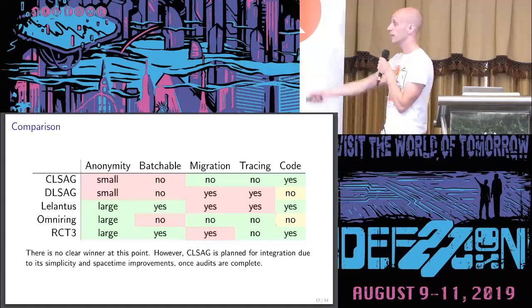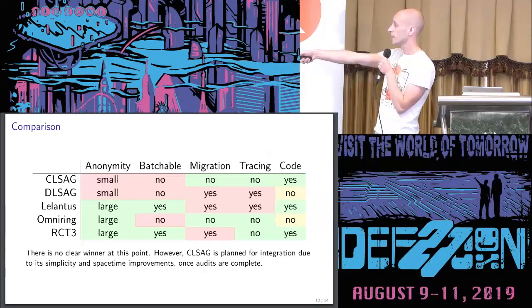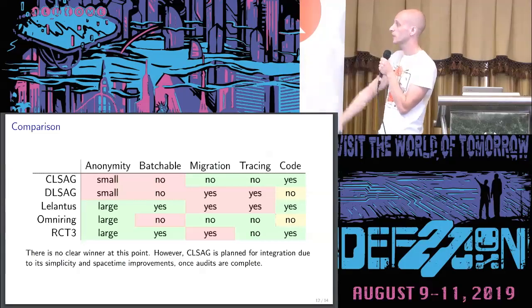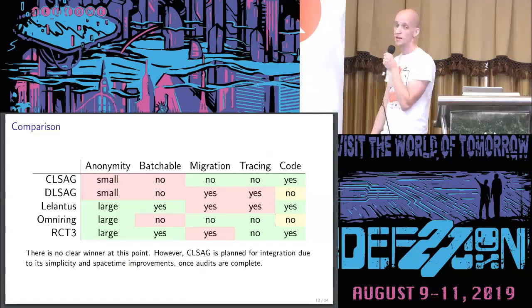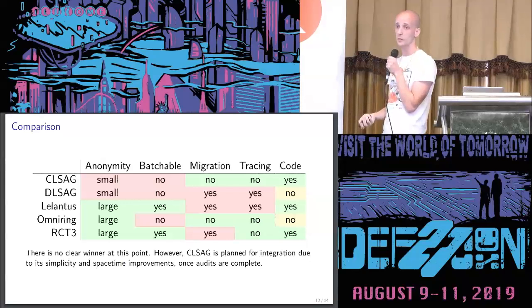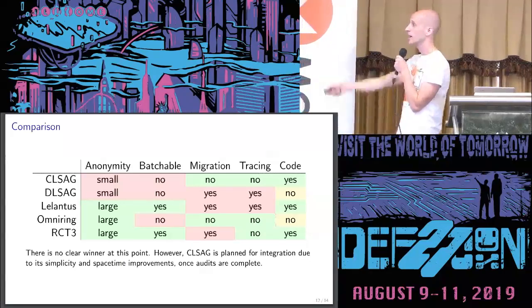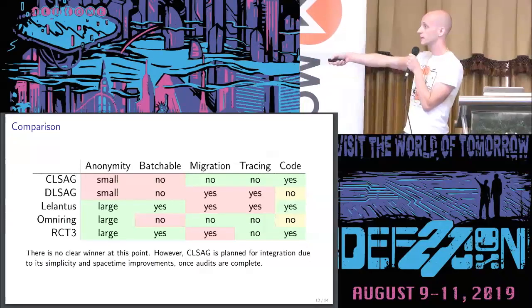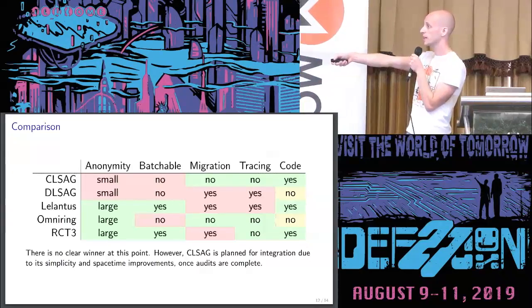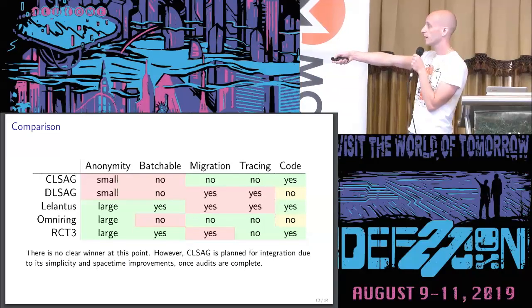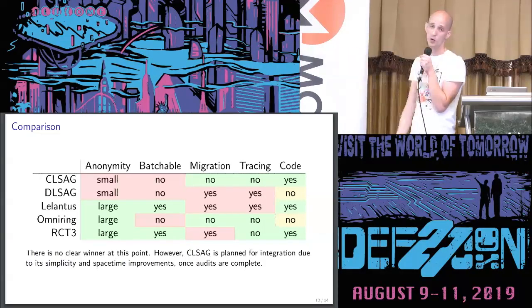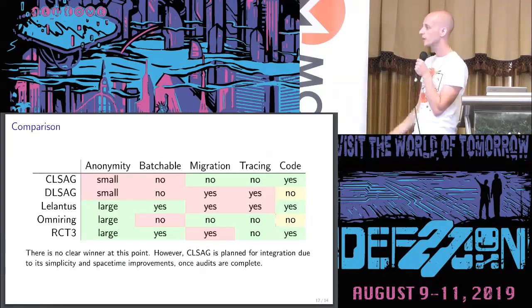My conclusion is that despite the interesting options, it's a mixed bag — I don't see a definite clear winner that gives us everything we want: high anonymity set, small proofs, efficient proofs, no real downsides. However, CLSAG, provided it passes audits — which are looking pretty good so far — will definitely go through as a current drop-in replacement. The code is very simple, and despite the fact that it doesn't increase anonymity or allow batching, it doesn't require migration, there is no tracing, we have code for it, and it is more efficient.